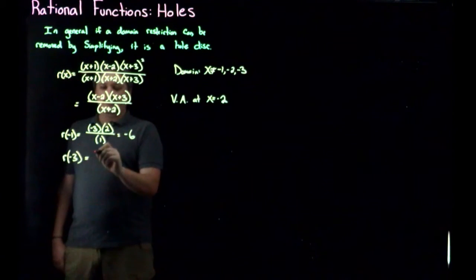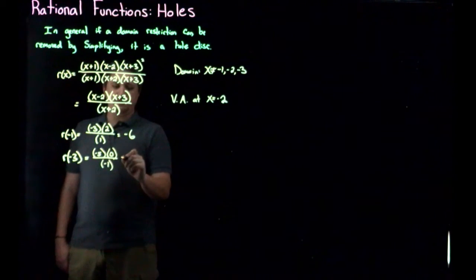So I'm going to get negative three minus two, so that's negative five, negative three plus three is zero, over negative three plus two is negative one. So again, not over zero so it's good. But zero times negative five is zero divided by negative one is zero.